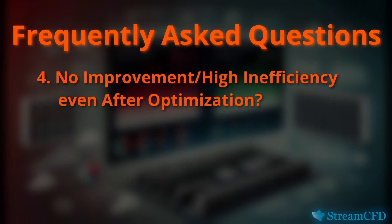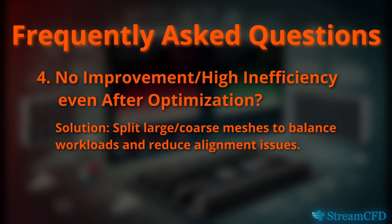Four: if you see no improvement or very little improvement after optimization but still high CPU inefficiency, try splitting meshes, especially those with coarse resolution. If there are multiple mesh sizes, splitting gives the least chances of mesh alignment problems, and there are higher chances of better results.